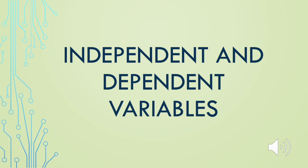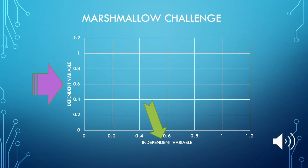In this lesson we are going to learn about independent and dependent variables and how to use them when creating a graph. When creating graphs we usually have two pieces of data and we have to figure out if they go on the x or the y axis by determining which one is independent and which one is dependent. Your independent variable always goes on the x axis and your dependent variable always goes on the y axis.